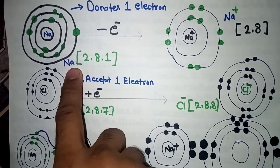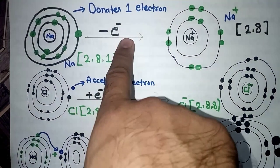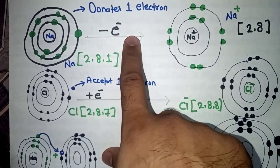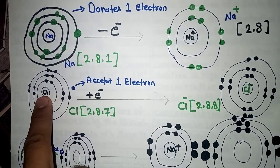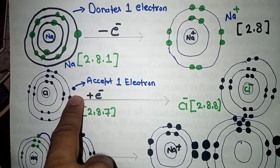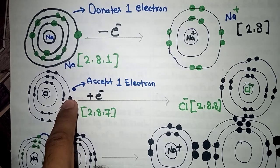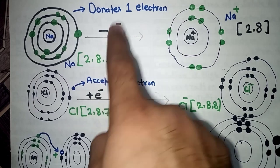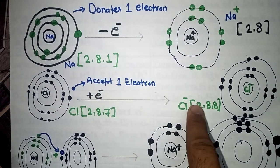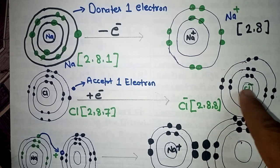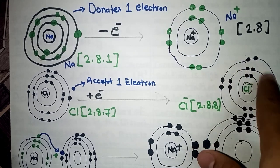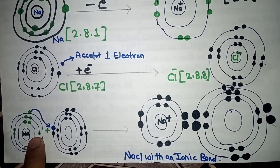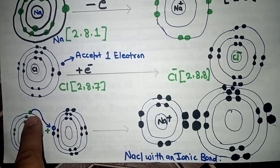So here is sodium: atomic number 11, configuration 2, 8, 1. It loses one electron — that electron is lost from the outermost shell — and sodium plus is formed with configuration 2, 8. Now for chlorine: atomic number 17, configuration 2, 8, 7. In the third shell there is one vacancy. Chlorine accepts the electron from sodium — it is shown as 'accept' with a plus sign and sodium's loss with a minus sign. Now chlorine minus is formed with configuration 2, 8, 8: first shell 2, second shell 8, third shell completely filled with 8 electrons.